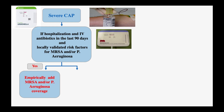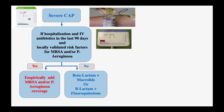If the answer is no — the patient was never hospitalized or received antibiotics more than 90 days ago — then we cover with beta-lactam plus macrolides, or beta-lactam plus fluoroquinolones. To summarize, the decision to add MRSA or pseudomonas coverage in severe community-acquired pneumonia depends on those three factors.